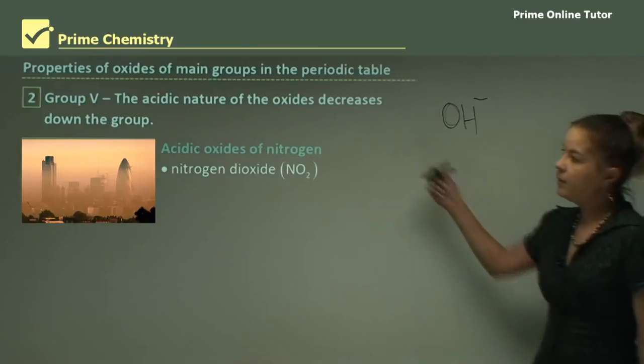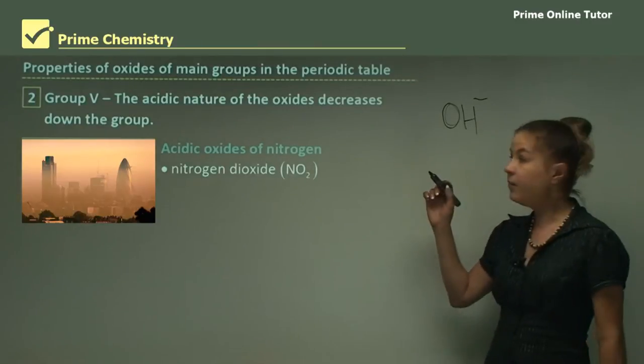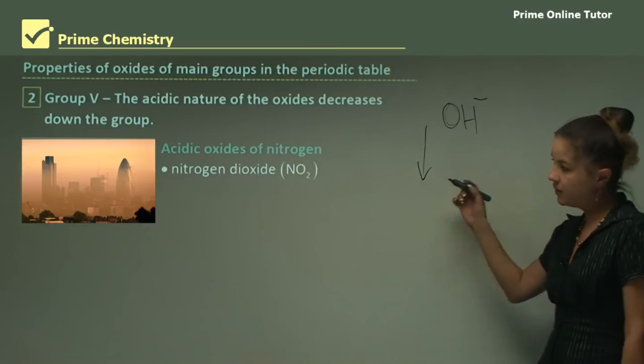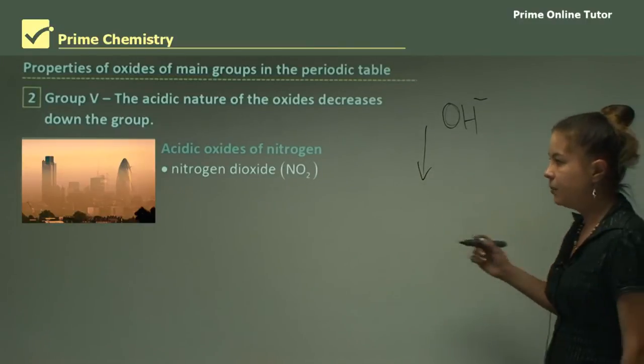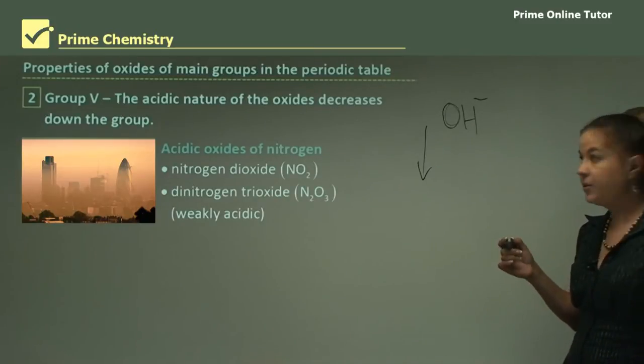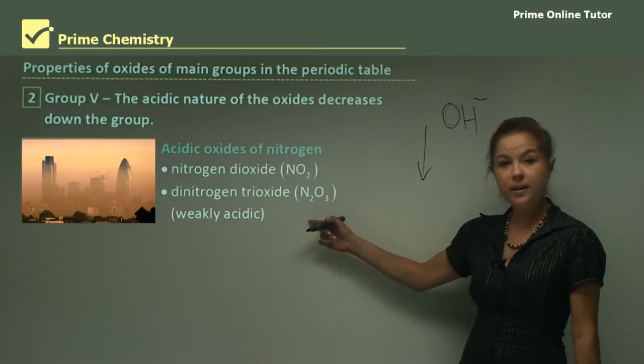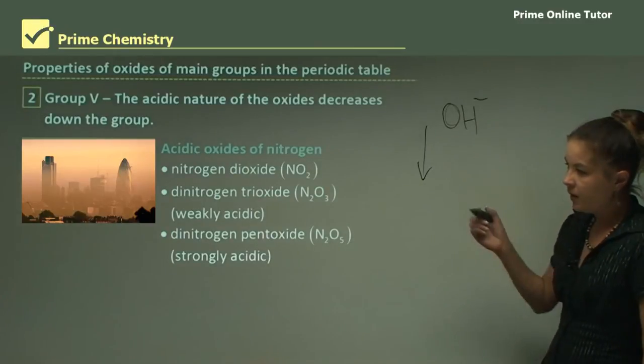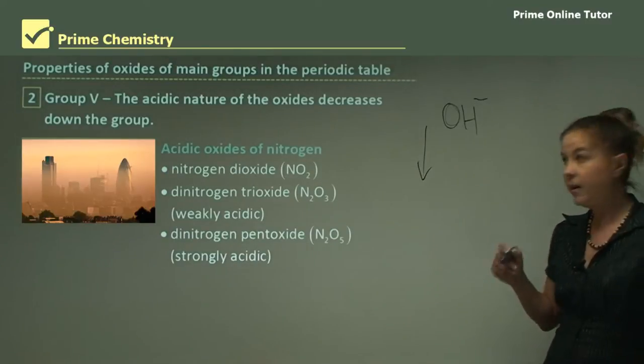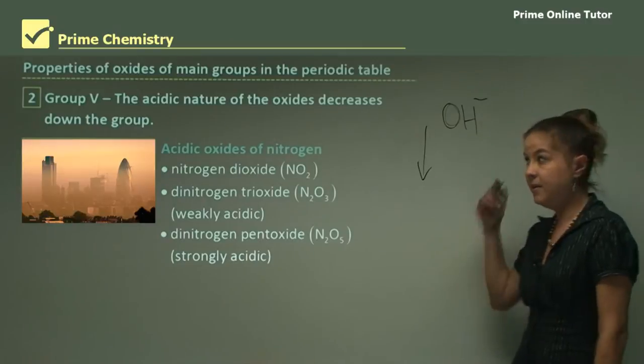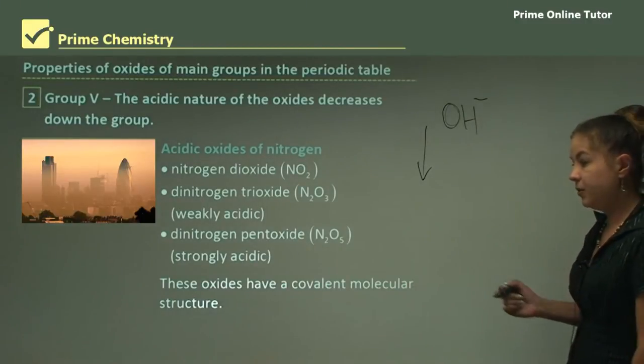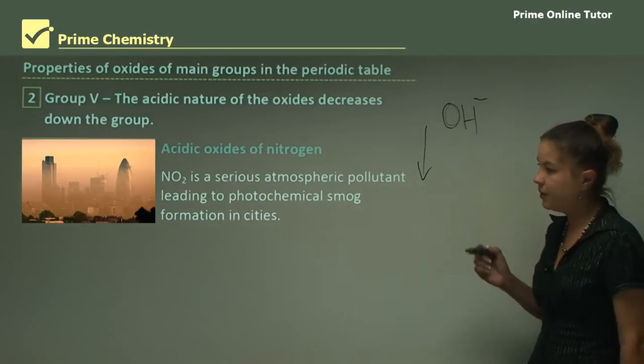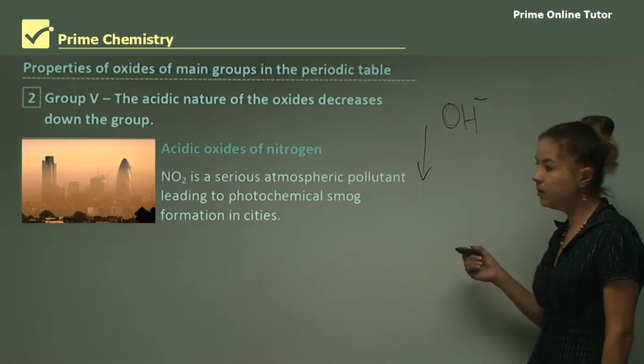Now we move to Group 5. The acidic nature of the oxides of Group 5 decreases down the group. Starting with nitrogen, nitrogen forms acidic oxides. Examples include nitrogen dioxide NO2, dinitrogen trioxide N2O3 which is weakly acidic, and dinitrogen pentoxide N2O5 which is strongly acidic. The picture there is of London showing a lot of smog due to these nitrogen oxides in the air. Nitrogen oxides have a covalent molecular structure. NO2 is a serious atmospheric pollutant leading to photochemical smog formation in cities.